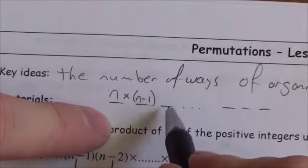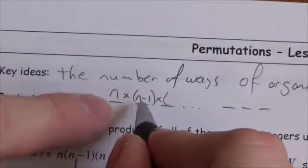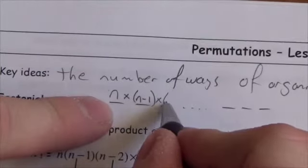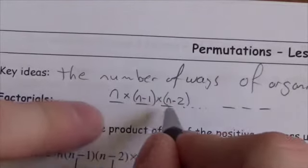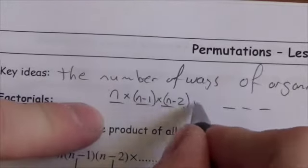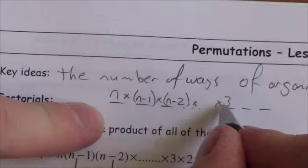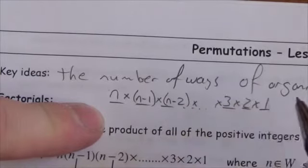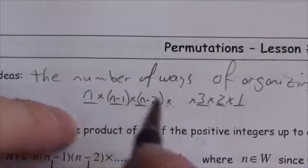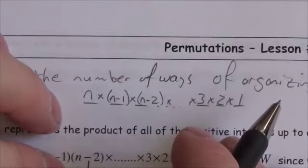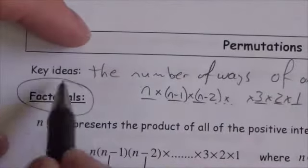For the third position, I've lost two choices, so I've got n minus two choices. You keep multiplying all the way down until you get to three choices left, then two, then you've only got one choice. This is the pattern — this is the key idea — and we call this a factorial.